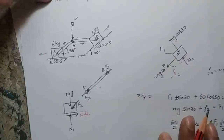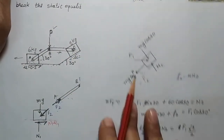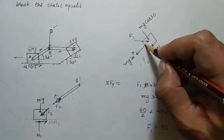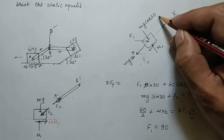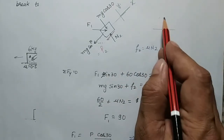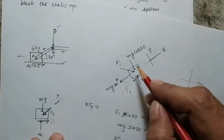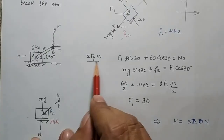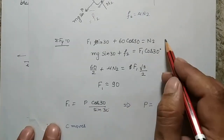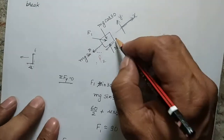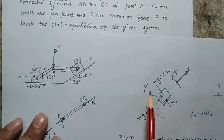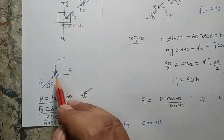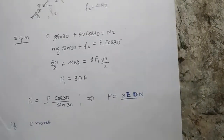Here is the free body diagram of the second block on the inclined surface. The forces include Mg sin theta along the plane, Mg cos theta perpendicular, normal reaction, friction (in the direction already explained), and force F1 from the rod. Using inclined coordinates — X along the slope and Y perpendicular — and balancing forces in both directions, F1 comes out to 90 N. Substituting 90 N into the equilibrium equation at point B gives P = 52 N.